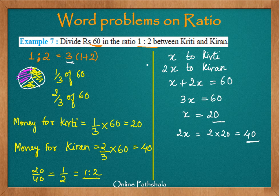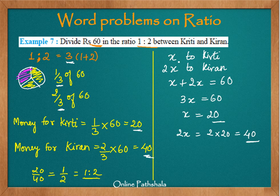Let us revise the two methods. In the first method, we add the numerator and denominator to get a whole, then represent each part as a fraction and multiply by the total (60) to get the corresponding values. In the second method using algebra, one quantity is x and the other becomes 2x because the ratio tells us how many times larger one is. We set x plus 2x equal to 60 and solve the algebraic equation to get both numbers.